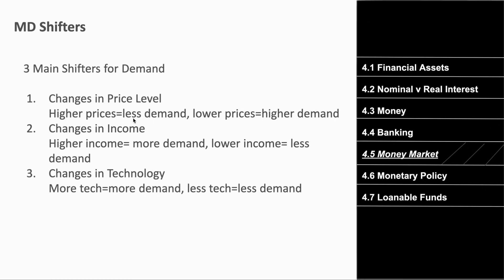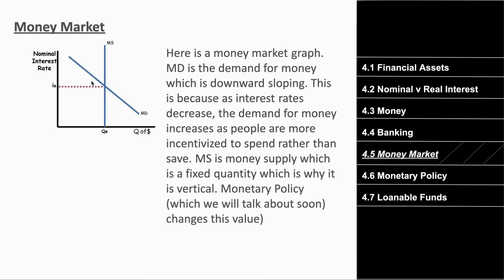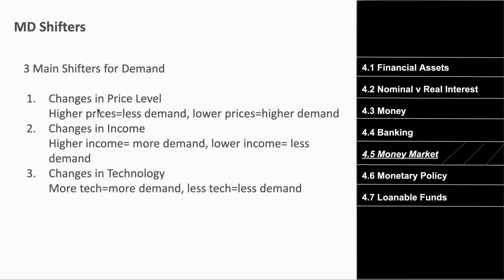Higher prices lead to less demand; lower prices lead to higher demand. Higher income means more demand; lower income means less. Changes in technology also shift demand — more technology means more demand, less technology means less demand. These three demand shifters are similar to general principles in microeconomics and Unit 3 of macro.